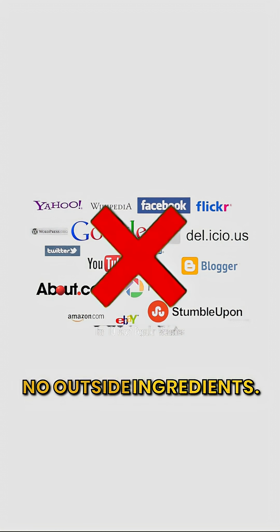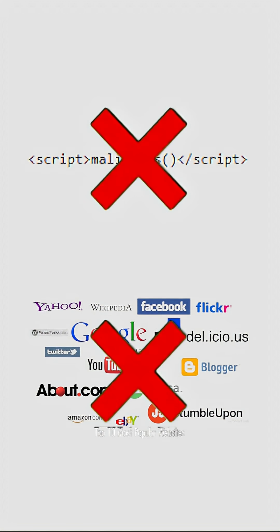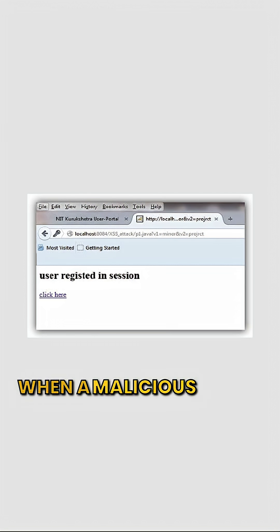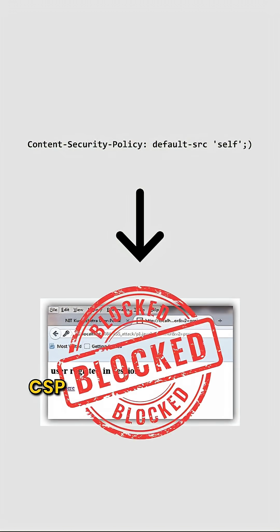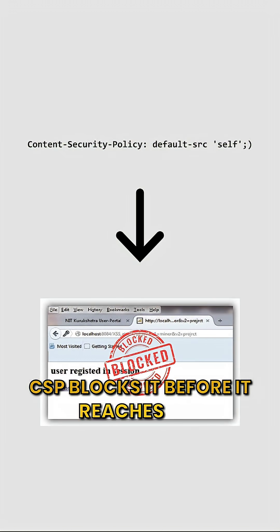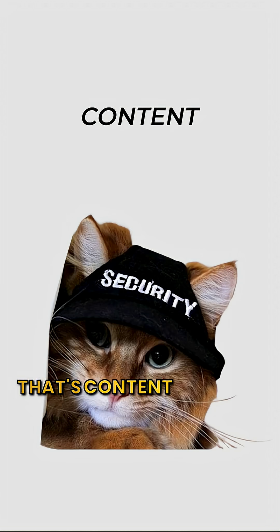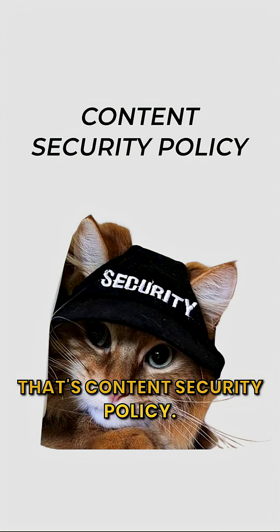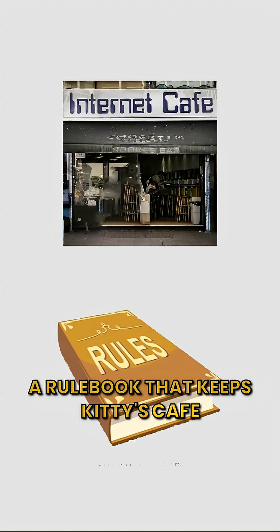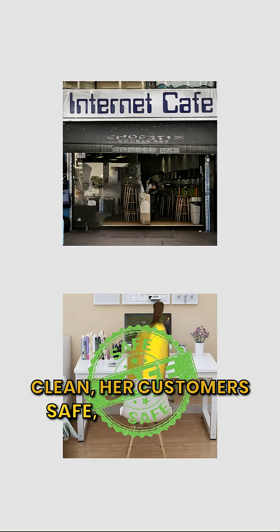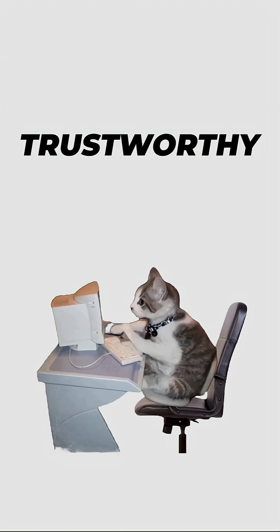No outside ingredients. No mystery code. When a malicious script tries to run, CSP blocks it before it reaches the customers. That's content security policy: a rulebook that keeps Kitty's cafe clean, her customers safe, and her code trustworthy.